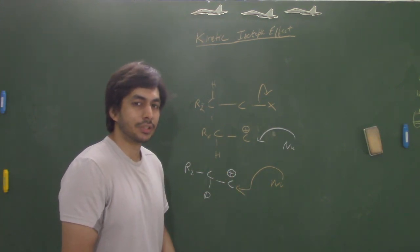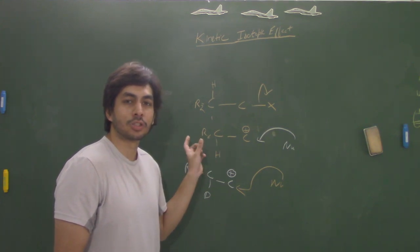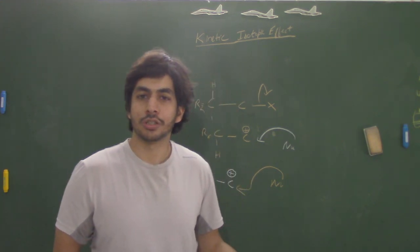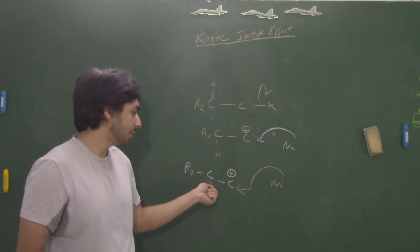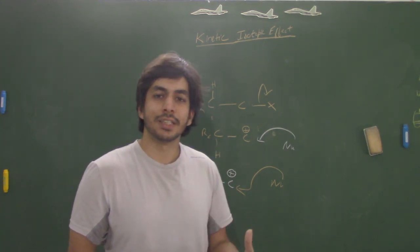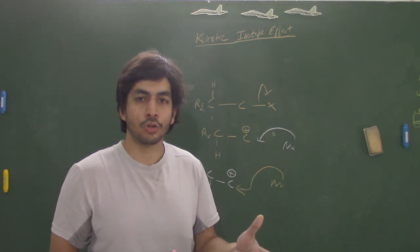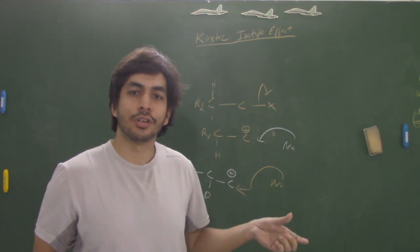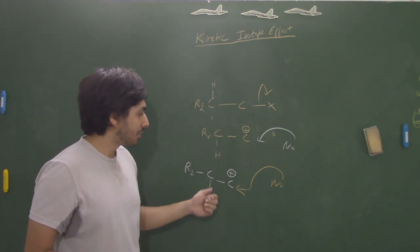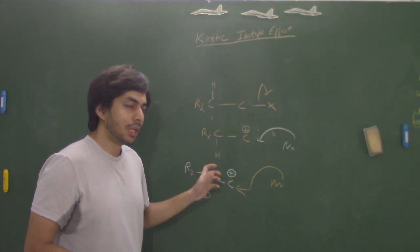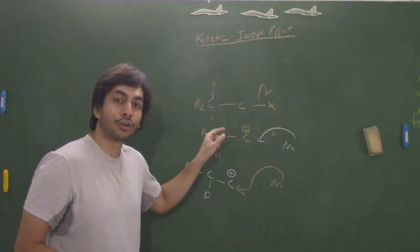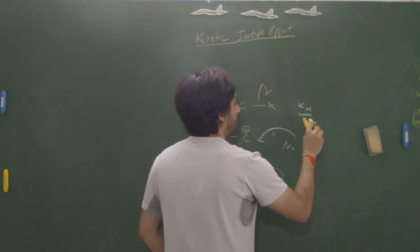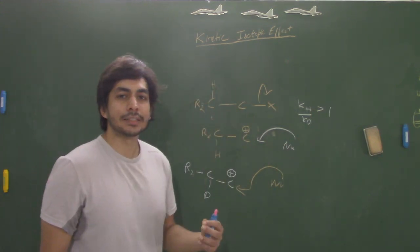How does deuterium versus hydrogen influence this carbocation? That is because of the hyperconjugation effect. The C–H bond is much more labile and easier to break compared to the C–D bond, and we correlate hyperconjugation to bond breaking — this bond breaks and electrons migrate. Since the C–H bond is easier to break, it has a greater hyperconjugation effect compared to the C–D bond. So when you replace hydrogens with deuterium, this nucleophilic substitution will go faster for hydrogen. When you measure KH upon KD for this reaction, it comes out greater than 1.